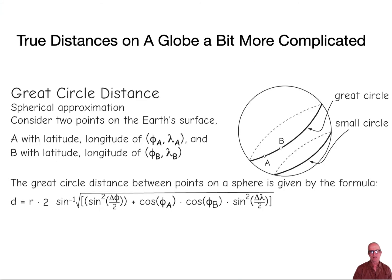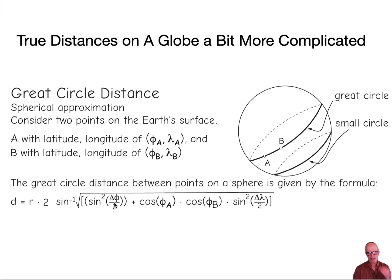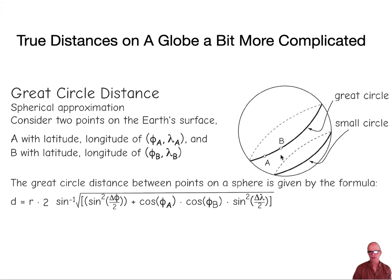If we really want to do distances correctly, a better approximation is using a great circle distance on a sphere. That's a more complex equation involving the longitude difference, the latitudes of both locations, to find the shortest distance between two points A and B. There are several different approximated versions of this equation. The measurement is along a great circle, which is always the shortest distance between two points on a sphere. A great circle connects the two points and the center of the Earth in a single plane — any other circle through the Earth is not a great circle and gives a longer distance.